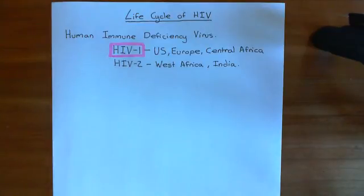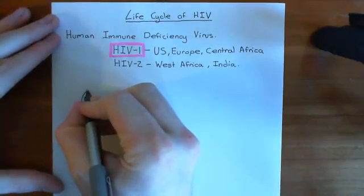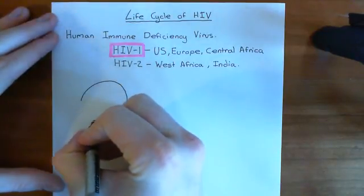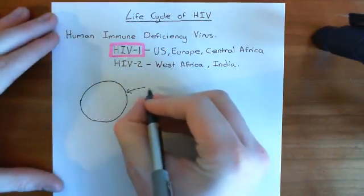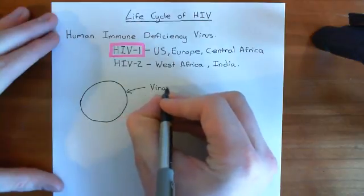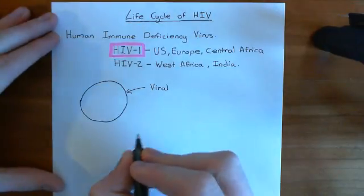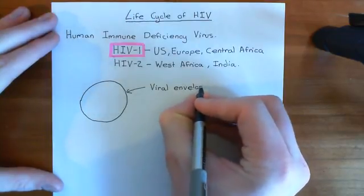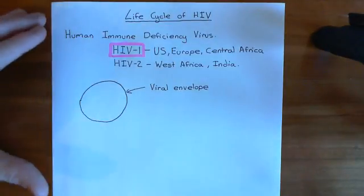The virion particle itself is spherical, and basically you have a layer of phospholipid bilayer. You have a membrane called the viral envelope surrounding the entire virus particle. This is a phospholipid bilayer that the virus particle has stolen from the cell that it budded off. We'll see right at the end, when we see virus particles budding off the cells they have infected, where this viral envelope comes from. Basically, it's just cell membrane that the virus particle has stolen.